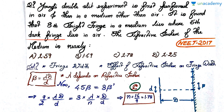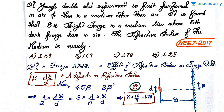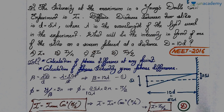Substituting into the formula, the only thing that changes when you change the medium is λ, since D and d remain the same. In a medium of refractive index n, λ becomes λ/n. So 8β' = 4.5β. Solving: 8·(λ/n)·D/d = 4.5·λD/d, which gives n = 8/4.5 = 16/9 ≈ 1.78. Option C is correct.